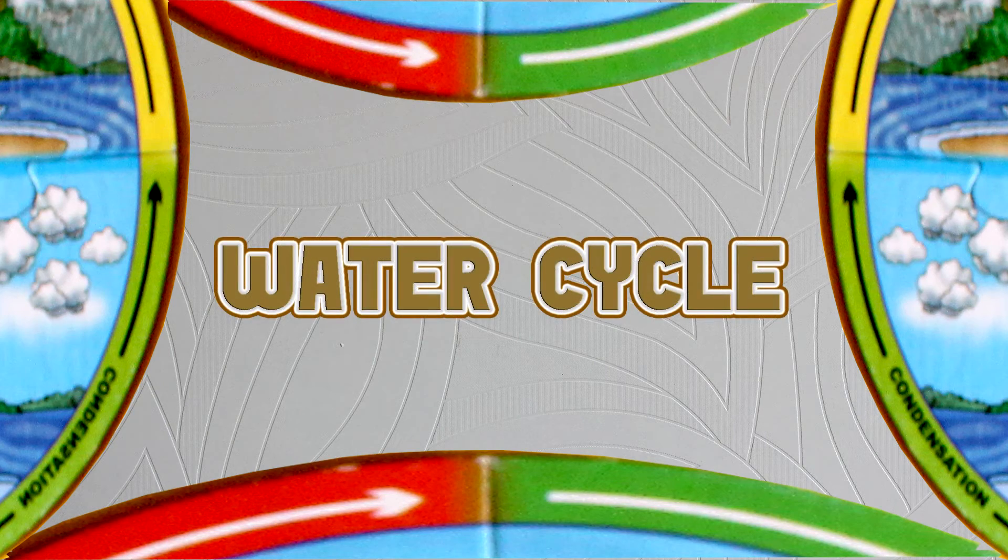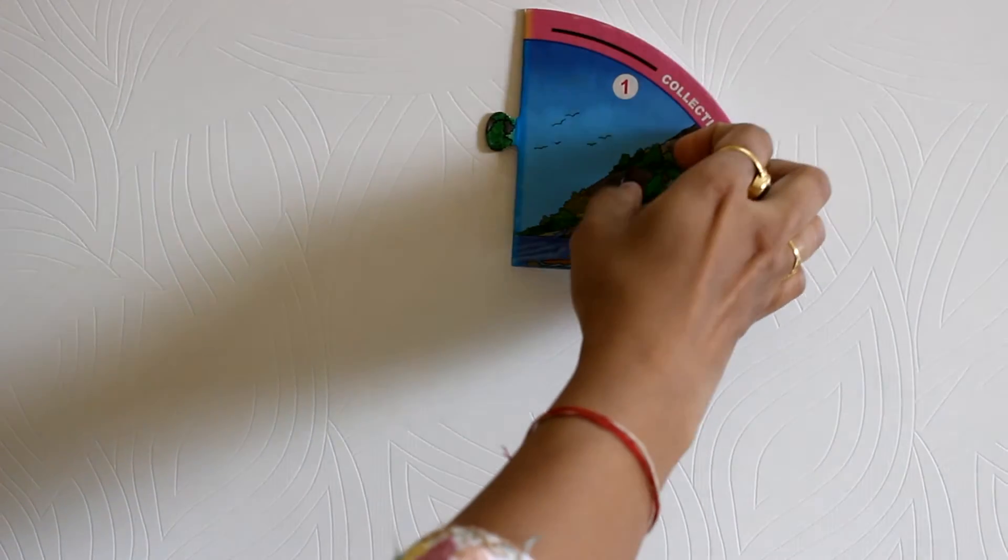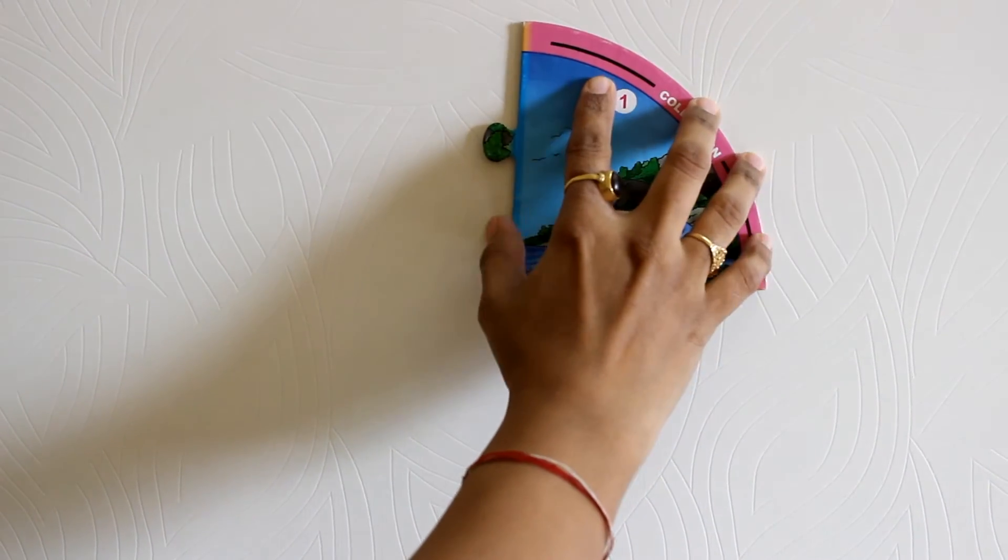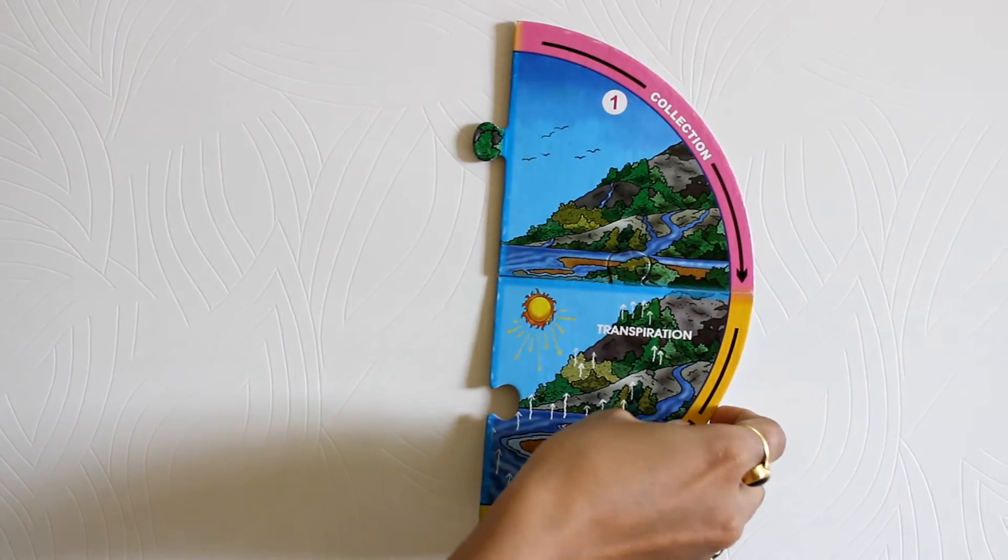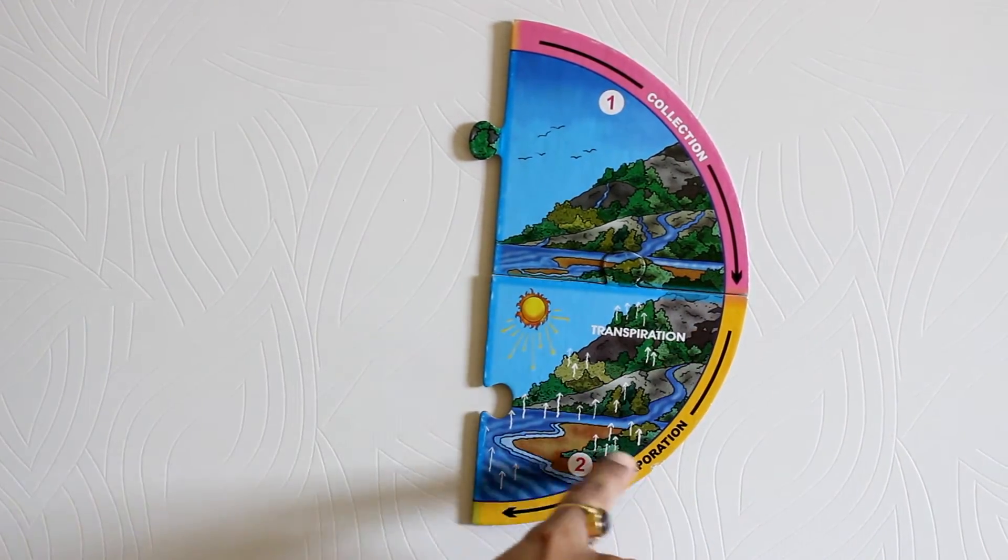Water cycle - that's very important and essential for everybody to know. It begins with stage one, collection of water. Stage two is called evaporation, where due to sunlight the water evaporates into the air. It's also called transpiration.